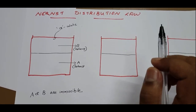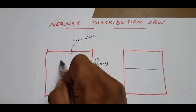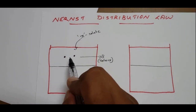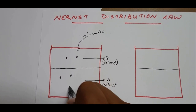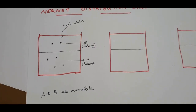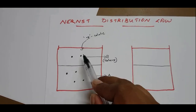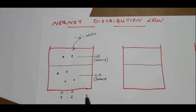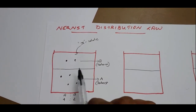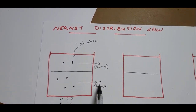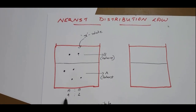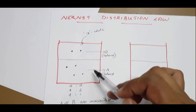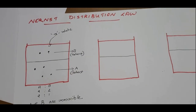Then according to Nernst distribution law, what happens? Suppose in solvent A the solute X is 2 molecules, and in solvent B the solute is 4 molecules. Then the solute X distributes with solvent A and with solvent B at a particular ratio of 2 is to 1 — that is, X distributes to solvent A forming a solution with a concentration ratio of 2 to 1.